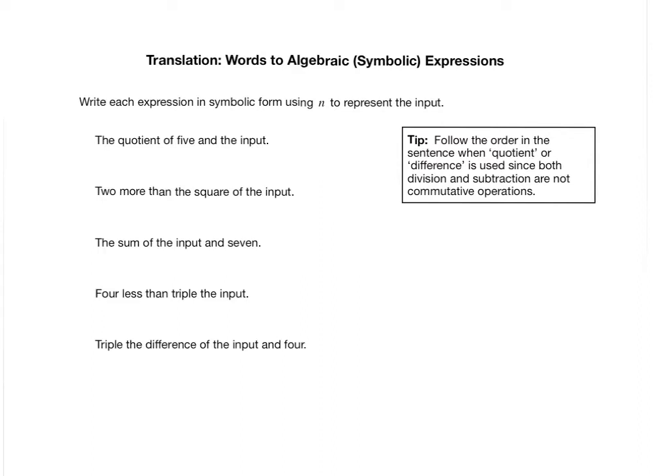Here's a quick important tip before we get started. Follow the order in the sentence when quotient or difference is used, since both division and subtraction are not commutative operations. Ultimately that means that the order matters with differences and quotients. So whenever difference or quotient is used in the sentence, write it down in the order that it shows up. Because remember, 7 minus 5 and 5 minus 7 are not the same thing.